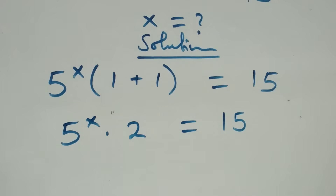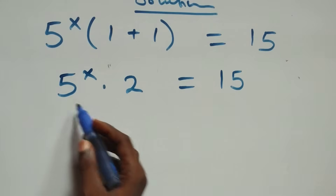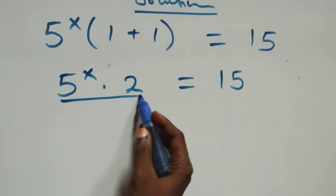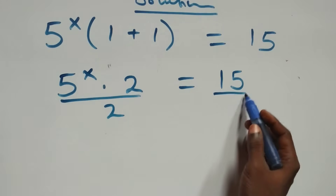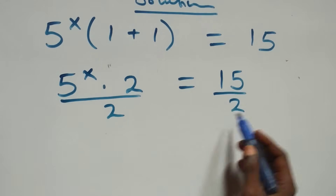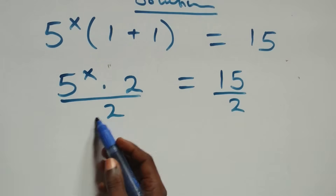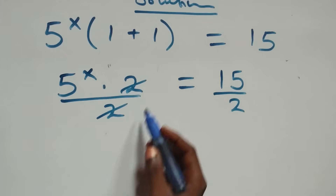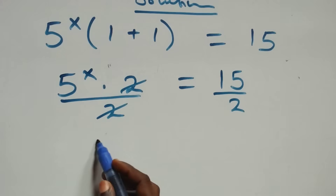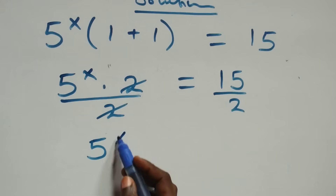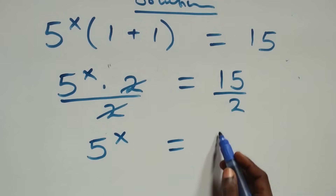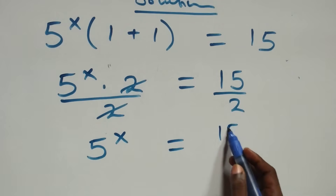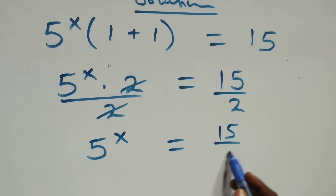The next step: divide both sides by 2. That is, divide this side by 2 and also divide this side by 2, which implies the two cancels each other. And we have 5 raised to power x equals to 15 over 2.